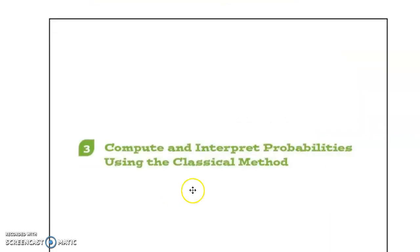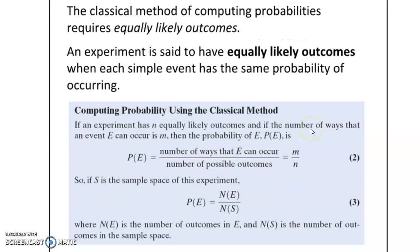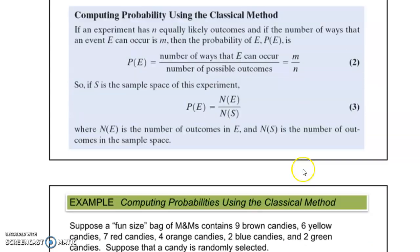Moving on to interpreting using the classical or theoretical method. If we're looking at the theoretical method, this considers what happens before the experiment occurs. Experimental or empirical probability is about looking at what happened in an experiment, whereas classical probability is about what should happen. The number of ways that event E can occur is M, the number of possible outcomes is N, so we do M divided by N.